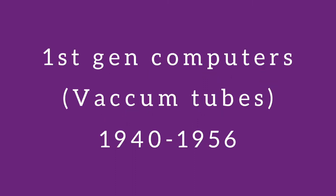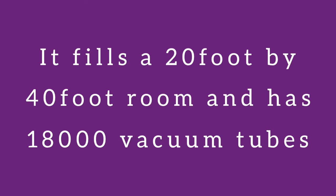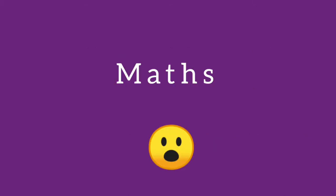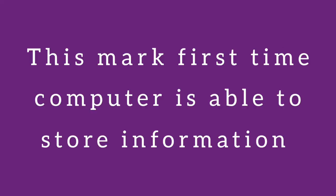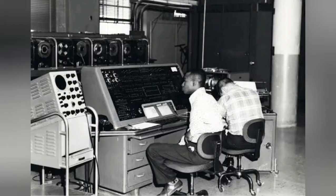The next type is the first generation, starting in the 1940s. First generation computers used vacuum tubes. Before modern computers, inputs and outputs were introduced, and we had to create mathematics and solve equations. This was the first time computers were able to store information on their main memory.